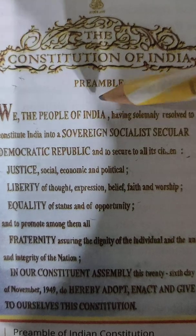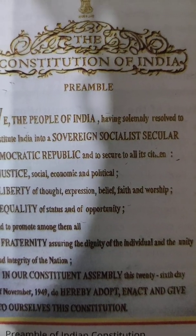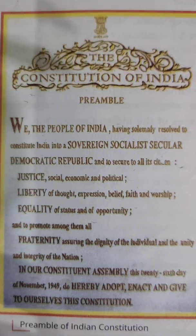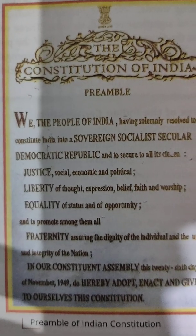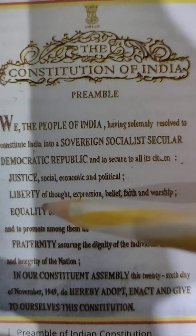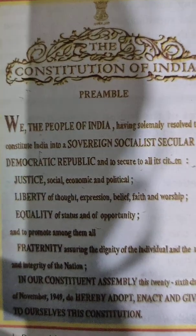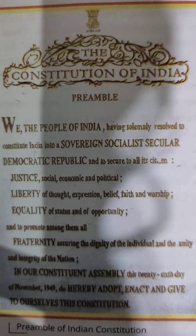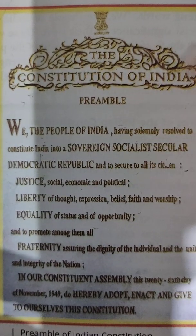We will study one by one what sovereign, socialist, and secular mean. These terms are used because when we were under British rule, Indian people were not given justice or liberty. They could not speak, they were tortured, and they had no freedom of expression. This is the reason our elected representatives gave India this constitution, so that every citizen can have access to all these values — sovereign, socialist, secular, democratic, republic.